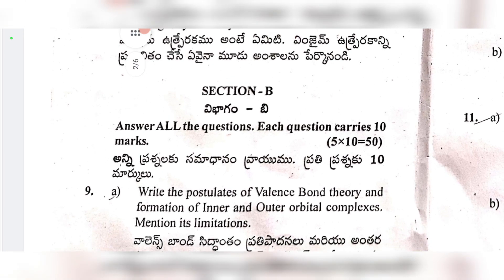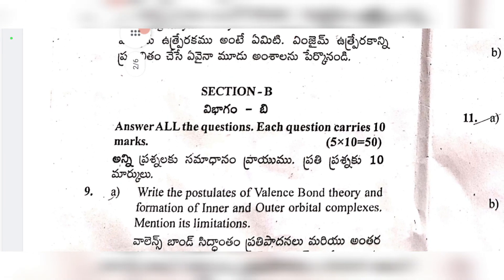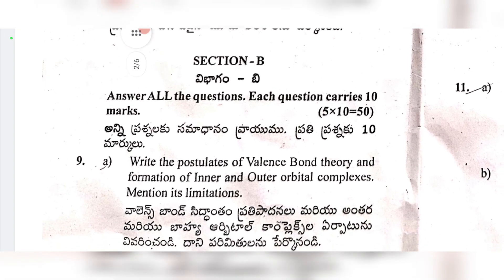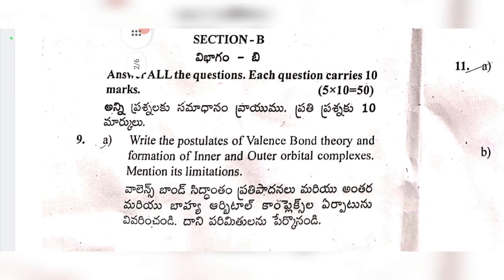Question 9a: write the postulates of valence bond theory and the formation of inner and outer orbital complexes. Mention its limitations.